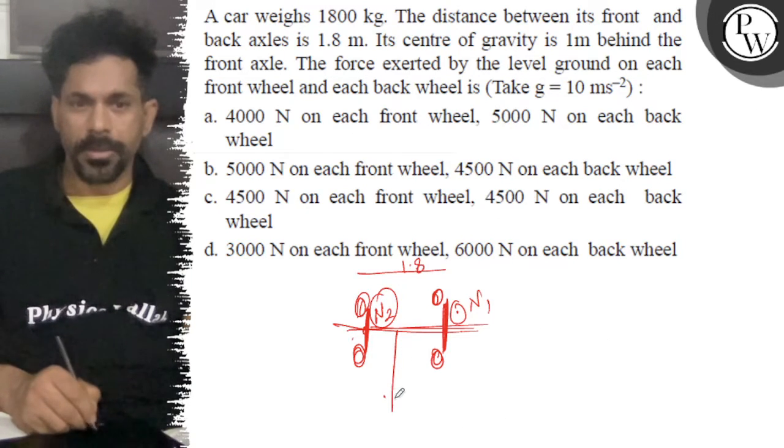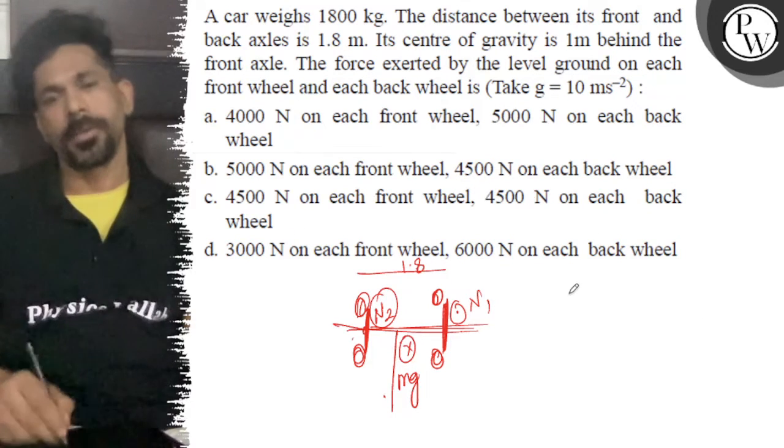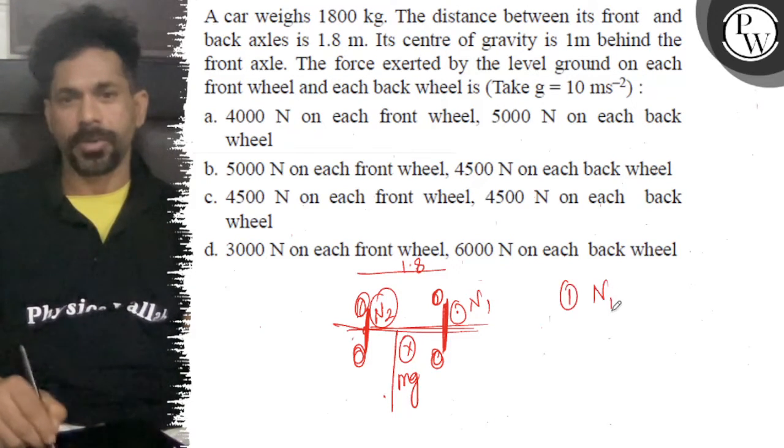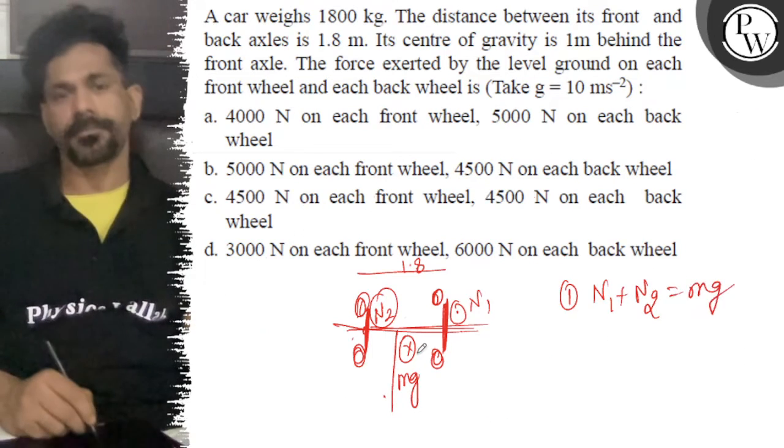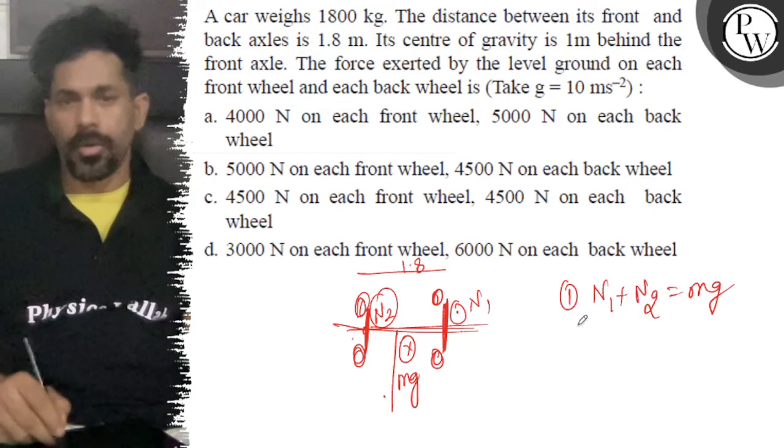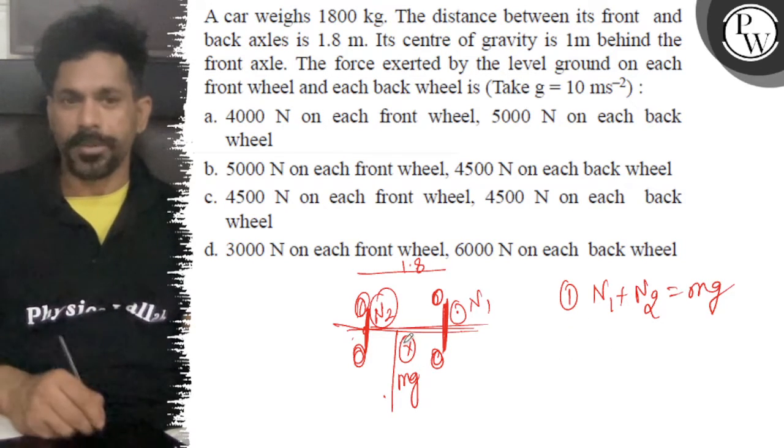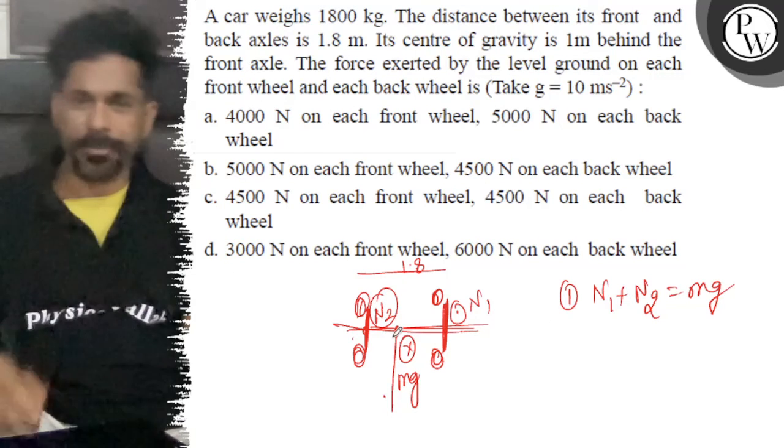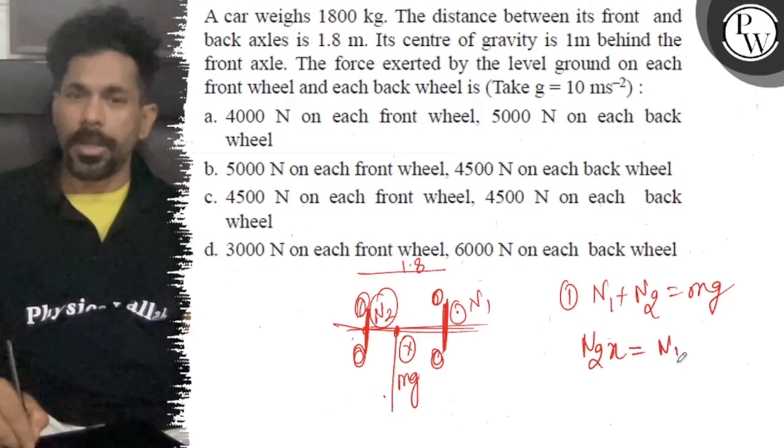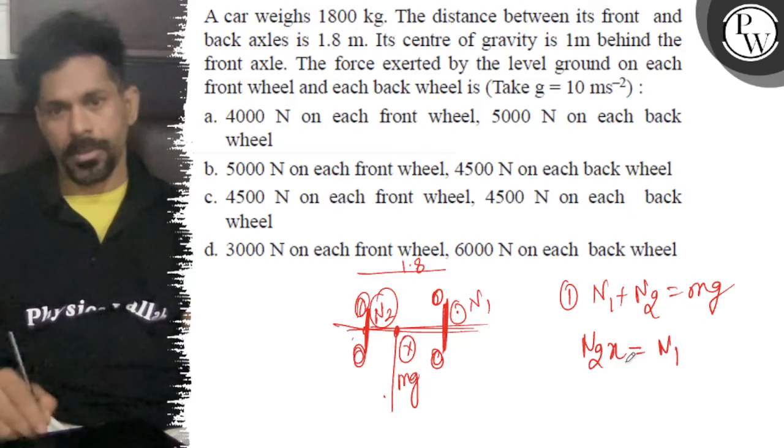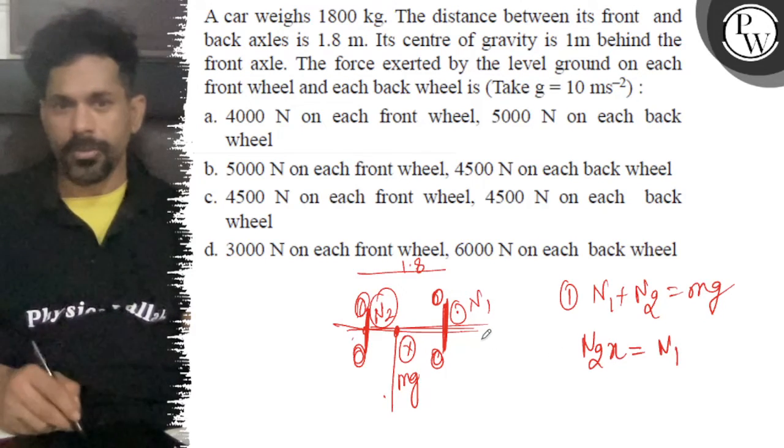So the first equation is n1 plus n2 equals mg, which is equal to 1800 times g. And the second equation is for center of gravity, so n2 times x equals n1... n2 times 0.8.